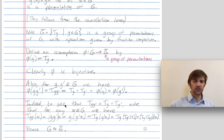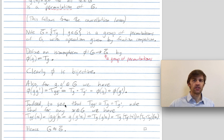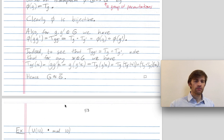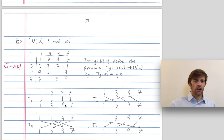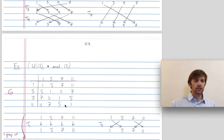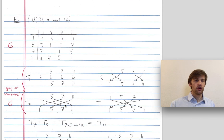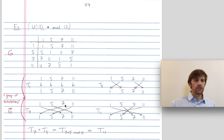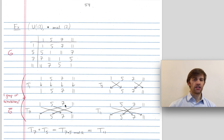A lot of notation going on there, but hopefully the example of U10 helps. It's worth going through this in detail and figuring out where your questions are. Let's talk through one other example besides U10 — the example of U12. U12 is the group of units mod 12. Its elements are the numbers relatively prime to 12, namely 1, 5, 7, and 11.